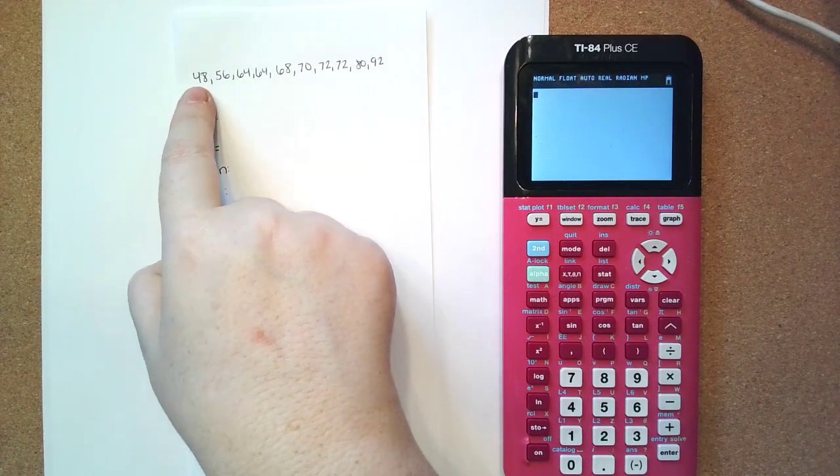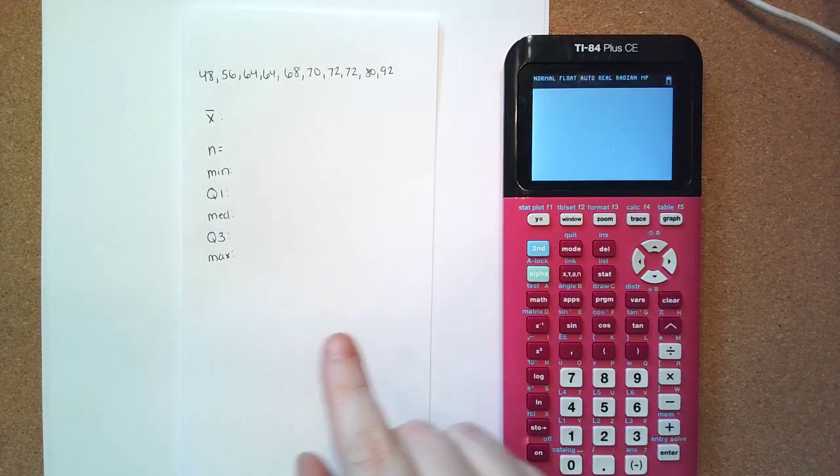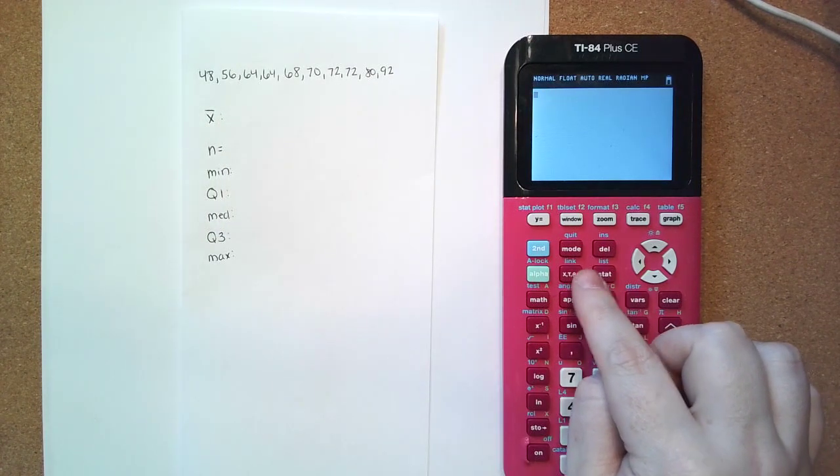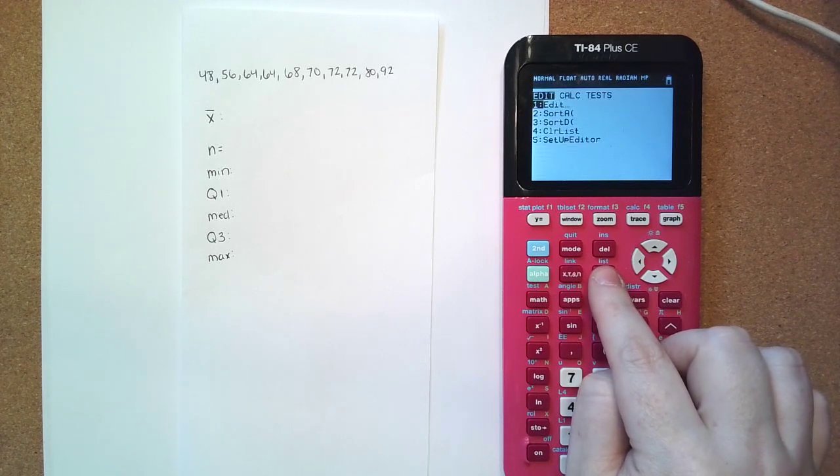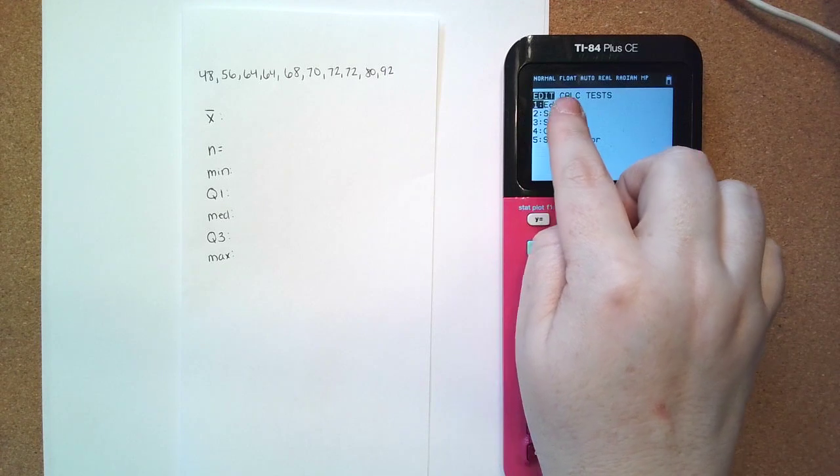So the first thing we want to do is plug in all of our data points into our calculator. To do that we're going to go to our stat key. This is for our statistics where we plug all of our values in. So we press stat, we're going to edit.